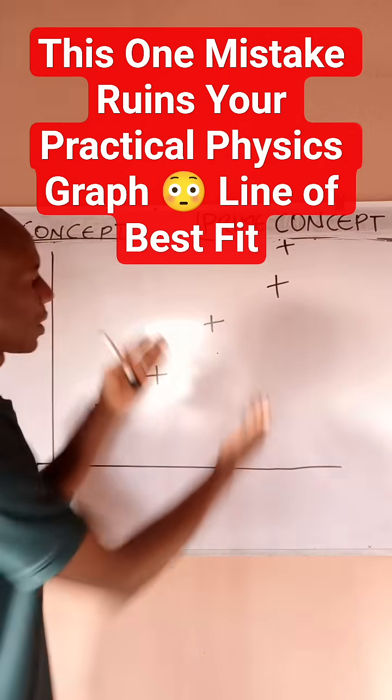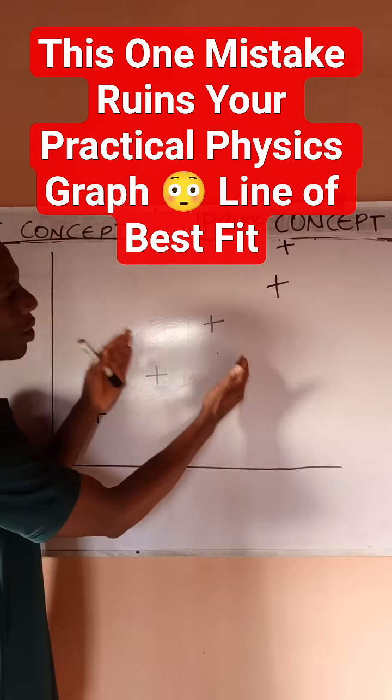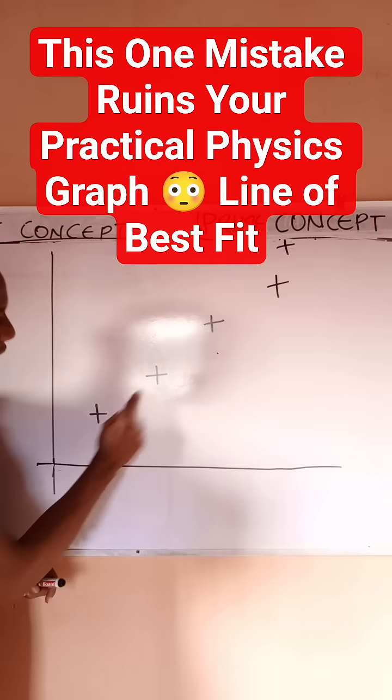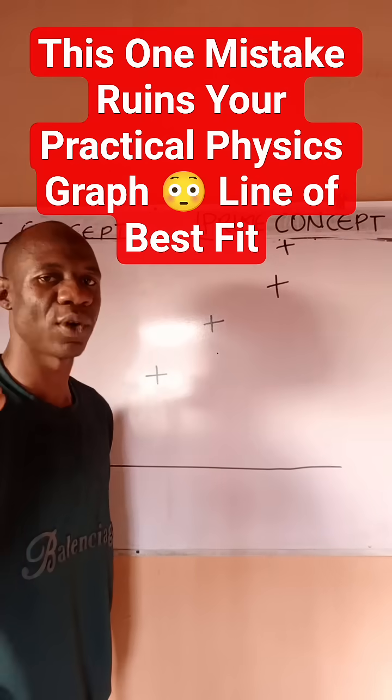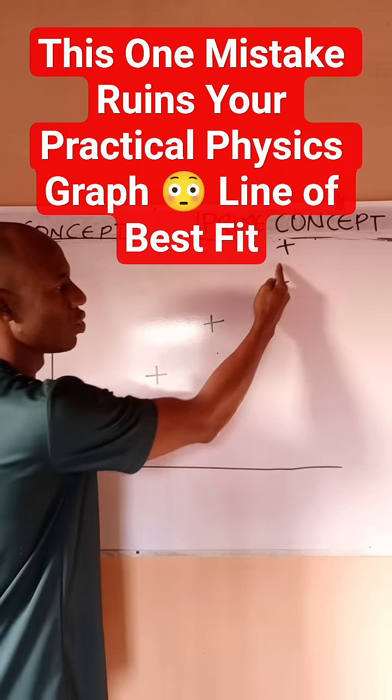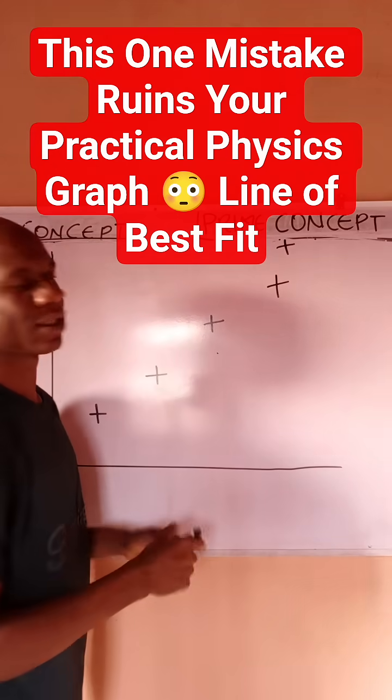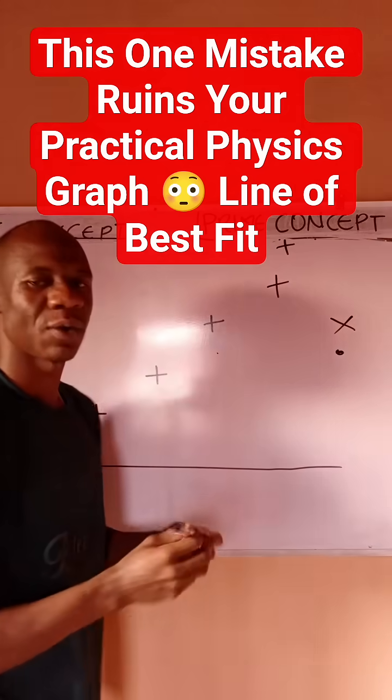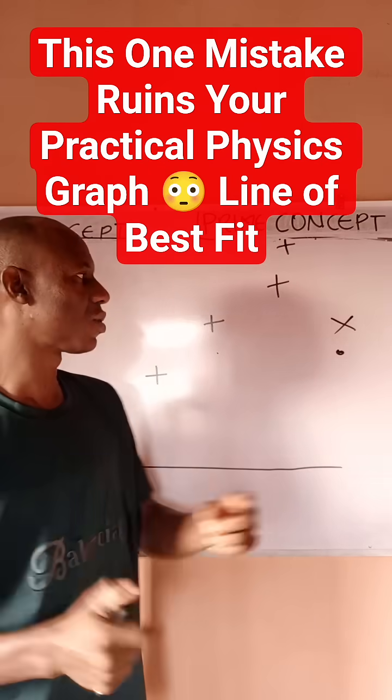you to understand that when you're plotting your graph and trying to locate a data point, each of these lines represents what we call data points. So it is ideal to use a plus sign. Don't use something like this. In one of my long videos, you will see the reasons why.